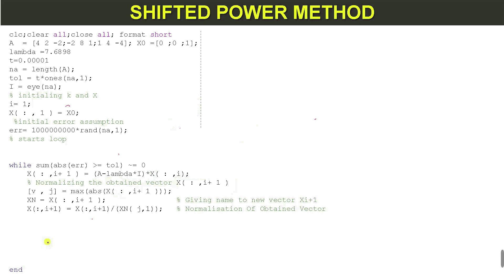After this, xn is the new obtained vector x(i+1). We normalize this vector by dividing by the largest value. We divide the vector x(i+1) by x(n,j), which is the largest value. For example, in the vector [-1, 2, -3], j is 3, so we divide the whole vector by the third element.